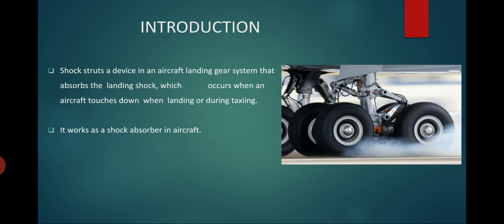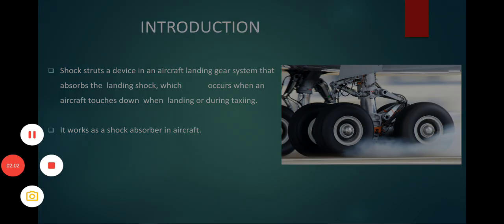The shock absorbers or shock struts are situated in the landing gears. A shock strut is a device in an aircraft landing gear system that absorbs landing shocks which occur when the aircraft touches down during landing or during taxiing. Taxiing refers to the movement of an aircraft on the ground under its own power.